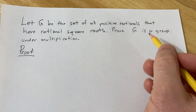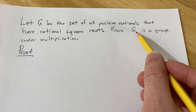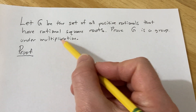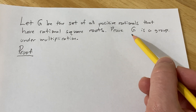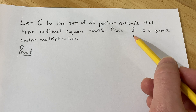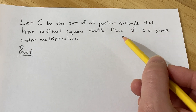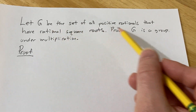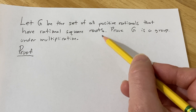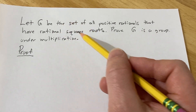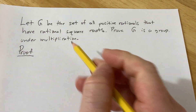To prove it's a group, we have to show that we have a binary operation on this set, which in this case is multiplication. We have to show that the operation is associative, that there exists an identity element, and that every element has an inverse. First, note that G is not empty because 1 is in this set — 1 is a positive rational whose square root is also rational.